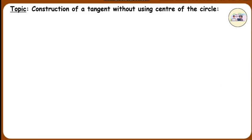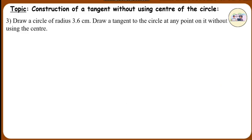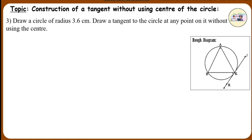Construction of a tangent without using the center. Question 3: Draw a circle of radius 3.6 cm and draw a tangent to the circle at any point on it without using the center. Analysis: By the converse of the tangent-chord angle theorem, if we draw angle BKR such that the measure of angle BKR equals the measure of angle BAK, then ray KR, i.e., line L, is the tangent at point K.